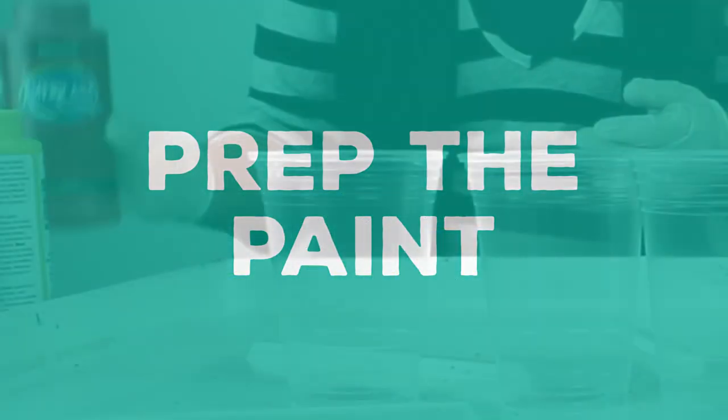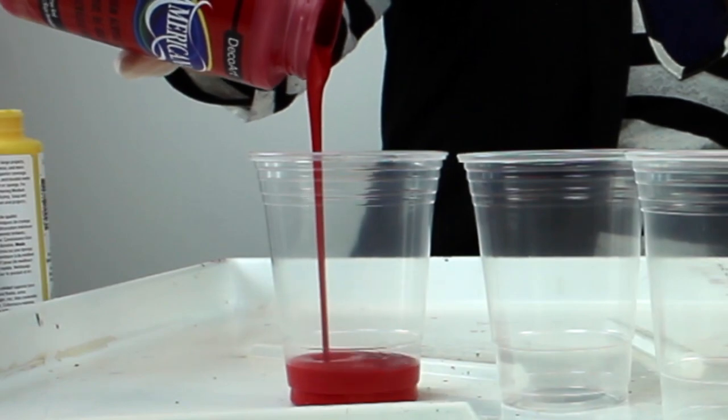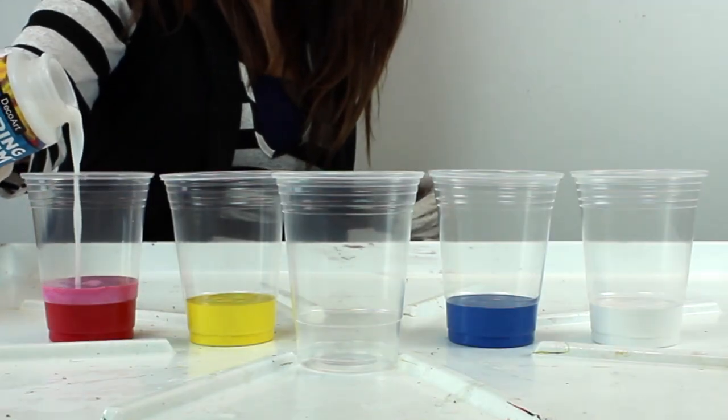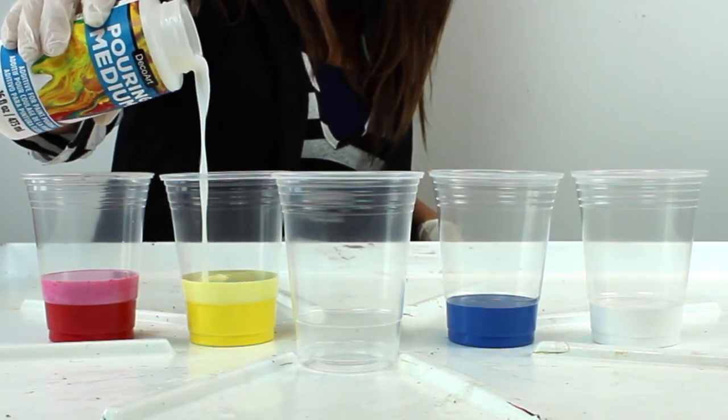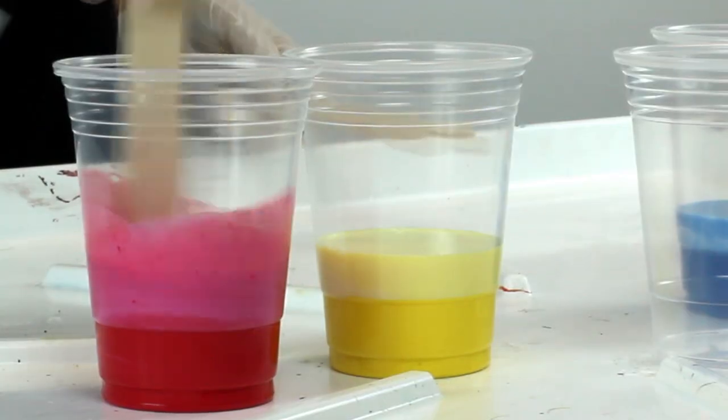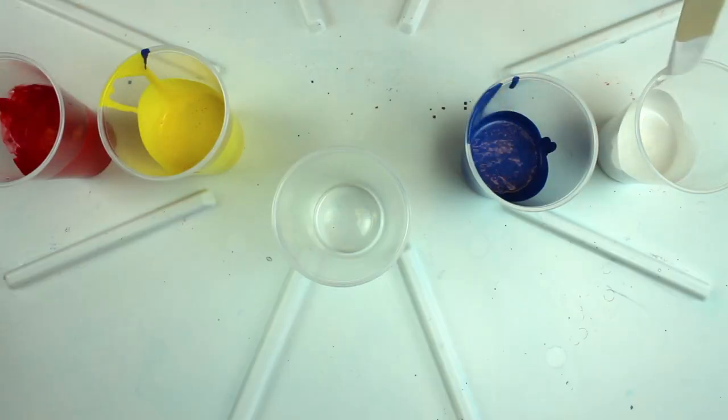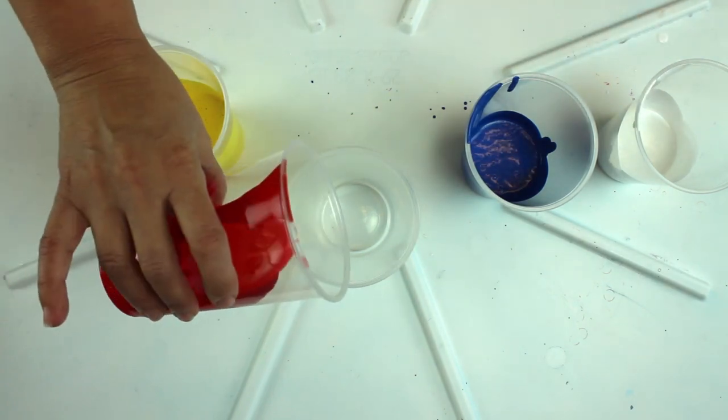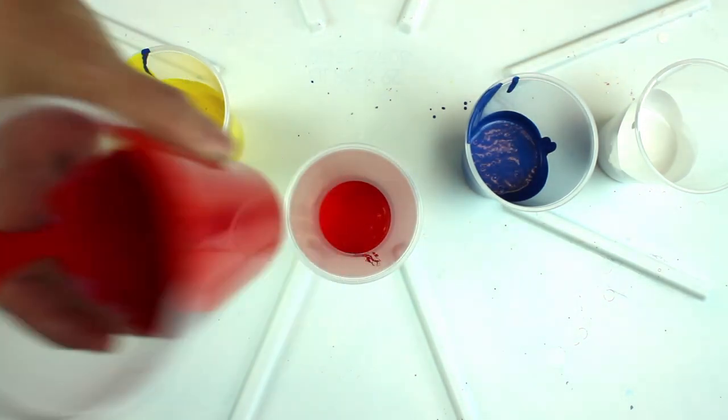Now that we've gathered all the supplies, it's time to prep our paint. Pour individual paint colors into plastic cups. Add pouring medium to your acrylic paints using the suggested ratios. Use a stir stick to mix well. Once you've mixed your paint, pour them into a single cup. Pour paint slowly to avoid overmixing your colors.